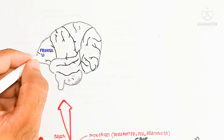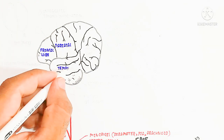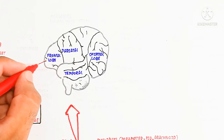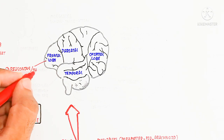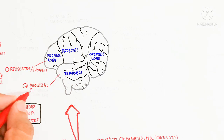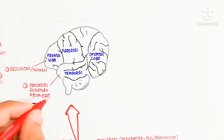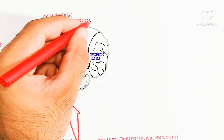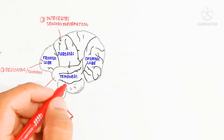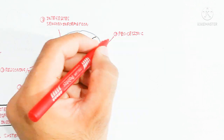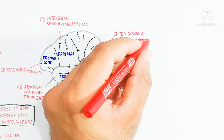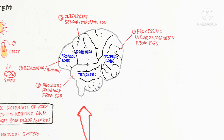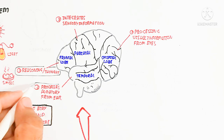Now let's discuss the structure of the brain. The brain contains different lobes: the frontal lobe, parietal lobe, temporal lobe, and occipital lobe. The frontal lobe is used for reasoning and thought. The temporal lobe processes auditory input from the ears for listening. The parietal lobe integrates sensory information. The occipital lobe processes visual information from the eyes, receiving images for integration.